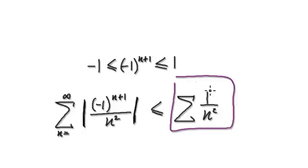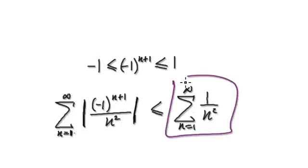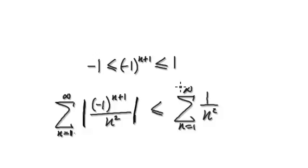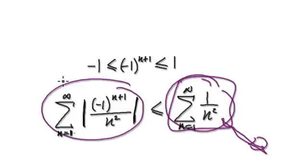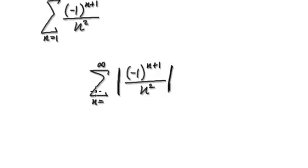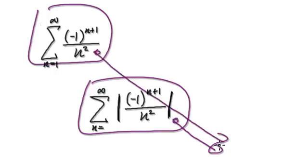By looking at this comparison, you should immediately be able to tell that the larger series will converge — this should be 1 over n squared summed from 1 to infinity. You should be able to tell that this converges because of the p-series test: if p is greater than 1, the series converges. Since 2 is greater than 1, this converges. If this larger series converges and it's bigger than the other series, then the absolute value series must also converge. Going back, since the absolute version converges, the original alternating series must also converge.